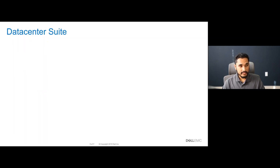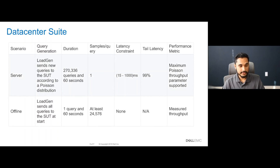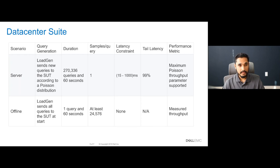In the data center suite, there are two scenarios: server and offline. The server scenario represents online applications where query arrival is random and latency is important. Queries have one sample each, arriving in accordance with a Poisson distribution. The system under test responds to each query within a benchmark-specific latency bound ranging from 15 to 1000 milliseconds. The performance metric for the server scenario is queries per second (QPS) achievable while meeting accuracy requirements.